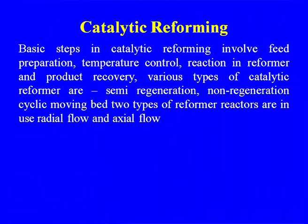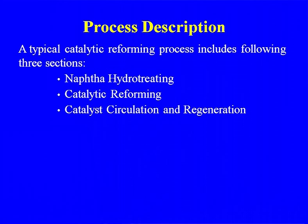Panipat Refinery (IOC) has both catalytic reforming and a para-xylene plant to produce high-value aromatic hydrocarbons such as BTX. The basic steps — feed preparation, temperature control, reaction in the reformer, and product recovery — have already been discussed. Types of catalytic reformers include semi-regenerative, non-regenerative, cyclic, and moving-bed. Reactors may be radial or axial flow. The key steps are naphtha hydrotreating, catalytic reforming, and catalyst circulation and regeneration. Reactions include dehydrogenation (main reaction), isomerization, dehydrogenation of paraffins (dehydrocyclization), and hydrocracking (undesirable, high-temperature side reaction).